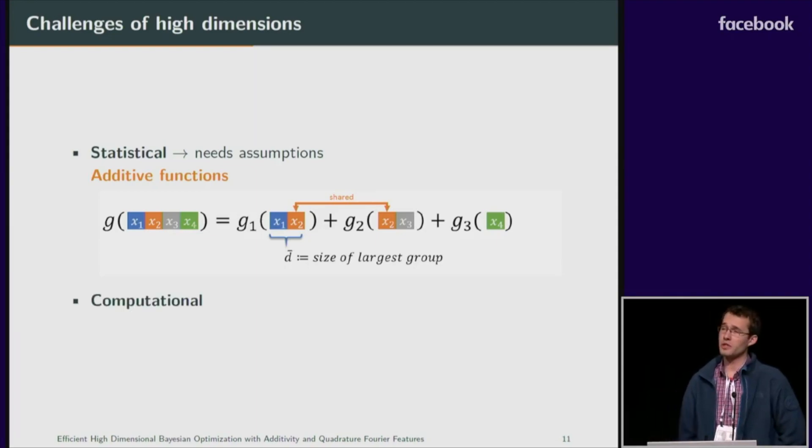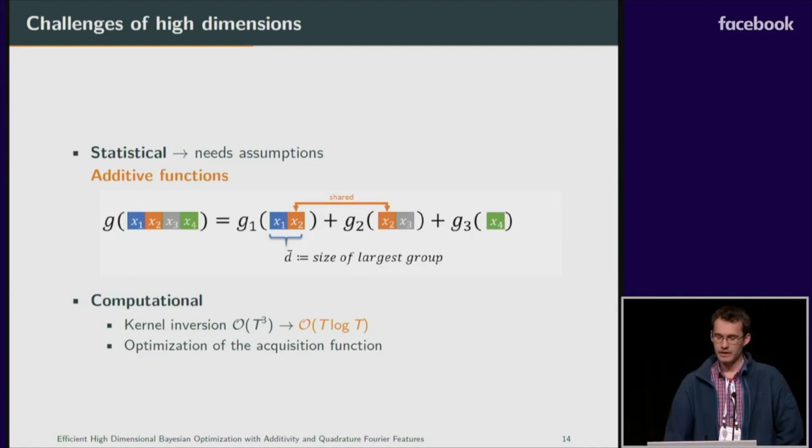The computational challenges of high-dimensional optimization is the main focus of our work. On one hand, since we're using Gaussian processes, there is kernel inversion cost which we significantly reduce. And secondly, optimization of this acquisition function can be sometimes as challenging as the original problem. We also simplify this to a simple coordinate optimization.